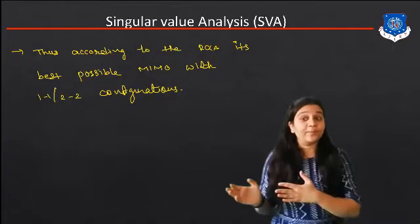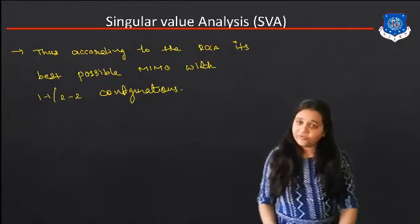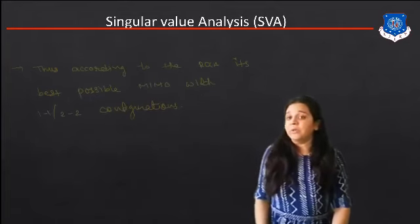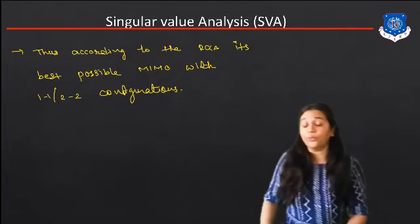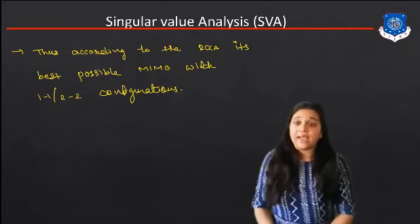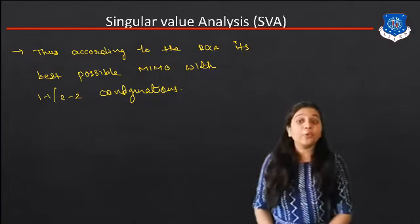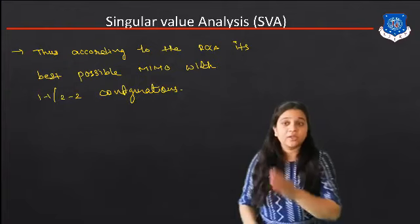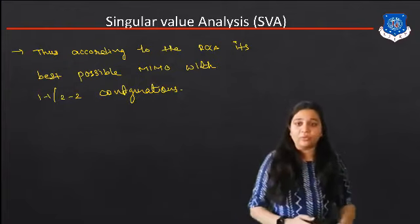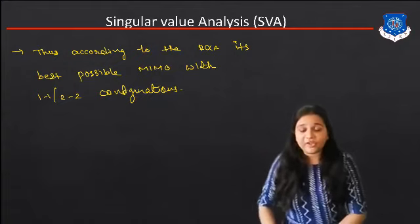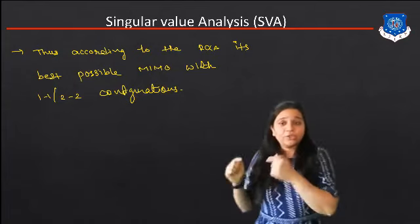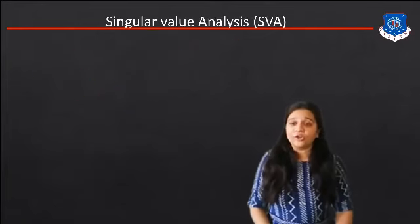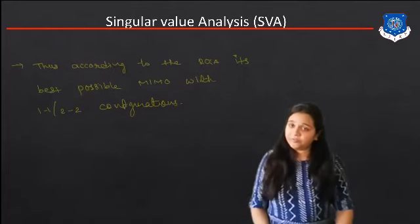According to the RGA, the best possible MIMO pairing is the 1-1, 2-2 configuration, because the RGA result is [1, 0; 0, 1]. So it is the best suitable pair of the MIMO system with configuration 1-1, 2-2. As we recall from the MIMO system lecture, for two inputs and two outputs U1, U2, Y1, Y2, the first configuration is U1 with Y1 and U2 with Y2 — that is 1-1, 2-2. The second configuration is U1 with Y2 and U2 with Y1 — that is 1-2, 2-1 configuration.